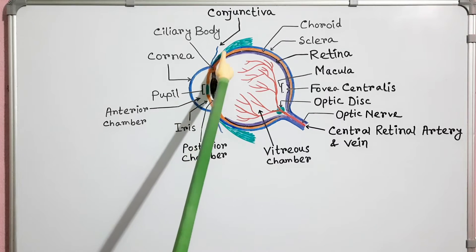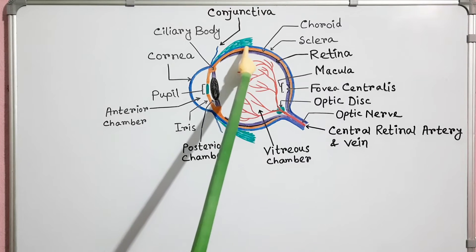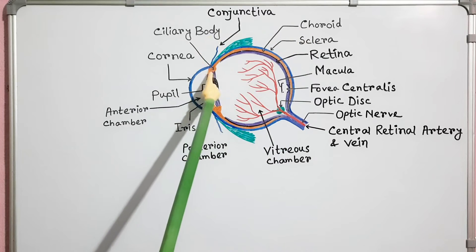This middle layer is the vascular layer of the eye. This layer consists of choroid, ciliary body, and iris.